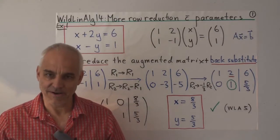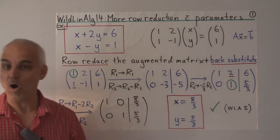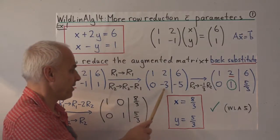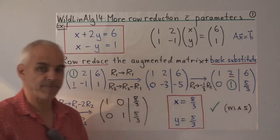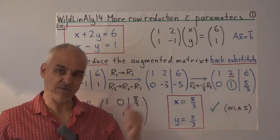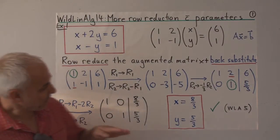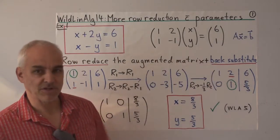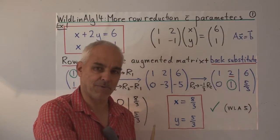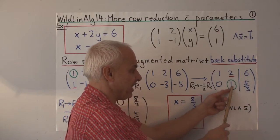Now let's go to fully reduced row echelon form. We make the leading entry a one — right now it's minus three, so we multiply this row by minus one-third, making that a one and this entry five-thirds. Now all leading entries are ones, which is one of the key points of fully reduced row echelon form. Next, we go back from the bottom up, starting with the bottom leading entry and making everything above it zero by adding multiples of that row to the rows above it.